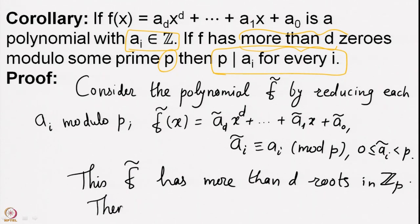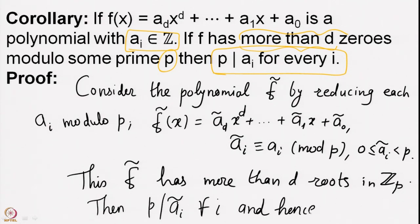Therefore p divides ã_i for each i, and hence p divides a_i for each i. The only way a polynomial defined over the integers can have more than d roots modulo a prime p is if the polynomial reduces to the zero polynomial mod p — which happens exactly when p divides all the coefficients of f. There are many nice applications of this corollary which we will see in assignments.